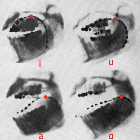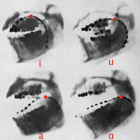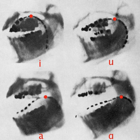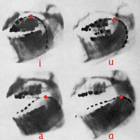Diphthongs are typically specified with a non-syllabic diacritic or with a superscript for the on or off-glide. Sometimes a tie bar is used, especially if it is difficult to tell if the diphthong is characterized by an on-glide, an off-glide or as variable. A officially represents a front vowel, but there is little distinction between front and central open vowels, and A is frequently used for an open central vowel. If disambiguation is required, the retraction diacritic or the centralized diacritic may be added.